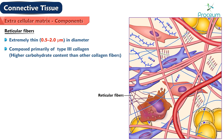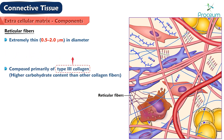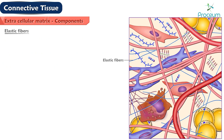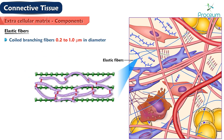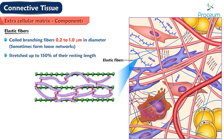Reticular fibers have higher carbohydrate content than other collagen fibers. Type 3 collagen fibers constitute the architectural framework of certain organs and glands. Elastic fibers are coiled branching fibers, 0.2 to 1 micrometer in diameter, that sometimes form loose networks. These fibers may be stretched up to 150% of their resting length.